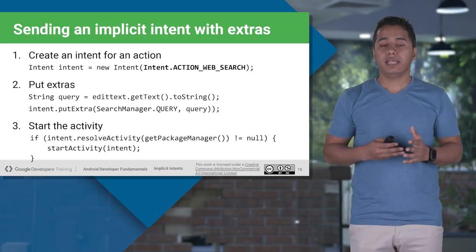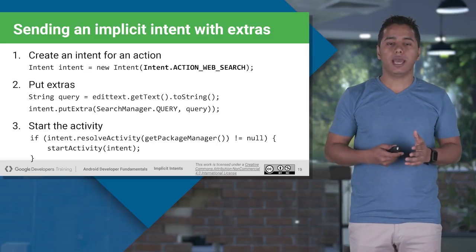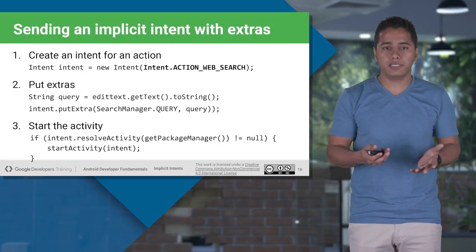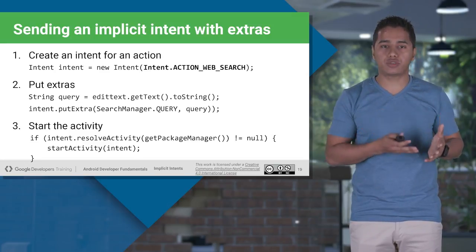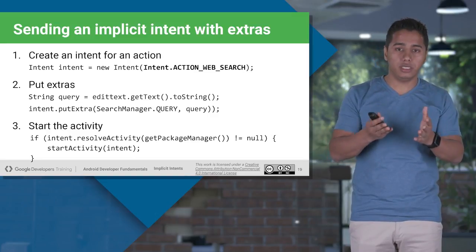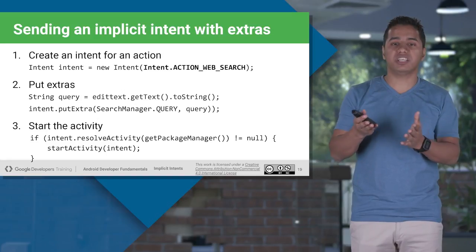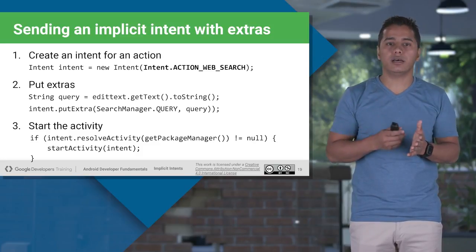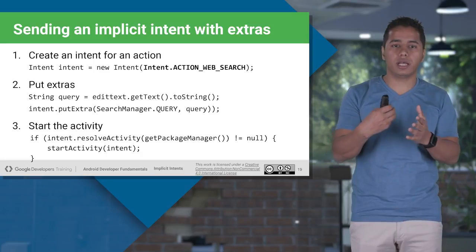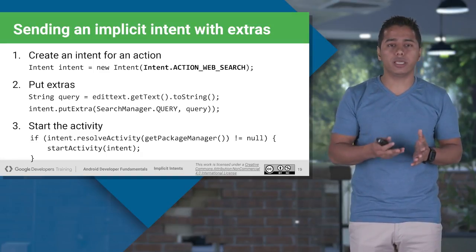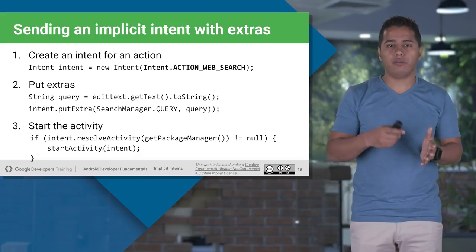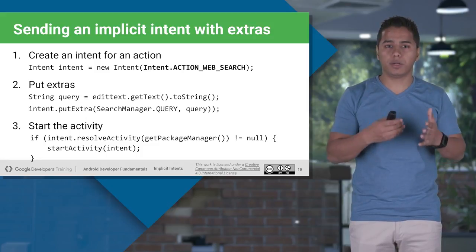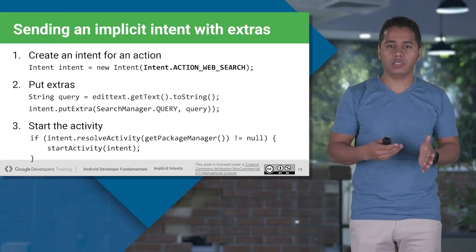To pass extra data with an implicit intent, it works just like with explicit intent. Create your Intent object and use the putExtra method to put the data with a key. The key can be anything, and you put whatever data you want — for example, getting text from an EditText using editText.getText().toString() and passing it as the data. Then check if there is an application to handle that action, and only then fire it.